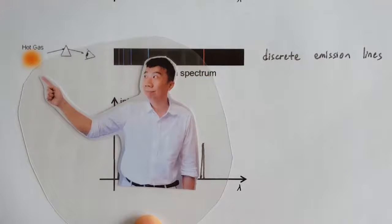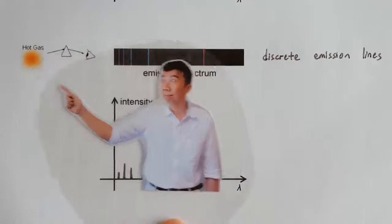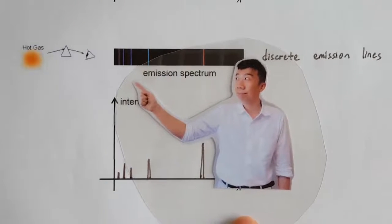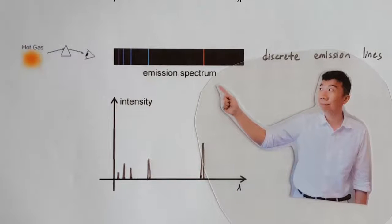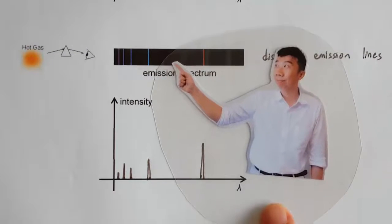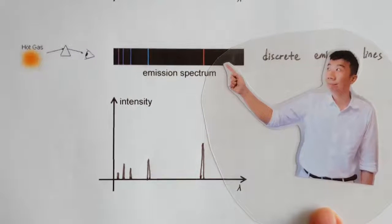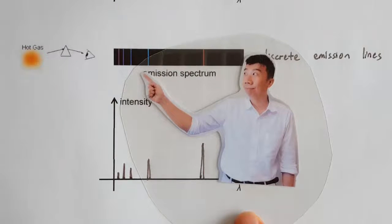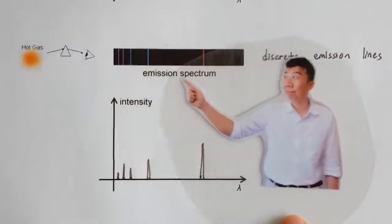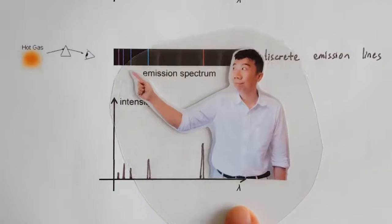A hot gas also emits light. The spectrum of the light given off by a hot gas is called the emission spectrum. The emission spectrum is not a continuous spectrum. It's a discrete line spectrum. It doesn't have any green, yellow, and all the different shades of red are missing. All it has are emission lines at very specific wavelengths. A particular shade of red, a particular shade of blue, and so on.